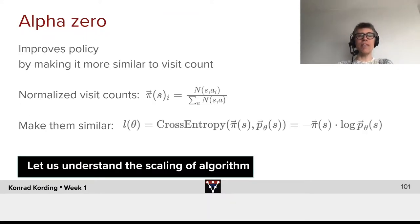So when it comes to Alpha Zero, it improves policy by making it more similar to the visit count. The normalized visit count, π(s), is the number N(s,a_i) divided by the sum of all actions of N(s,a).